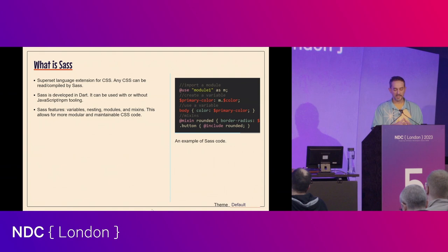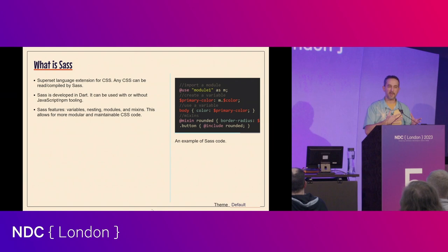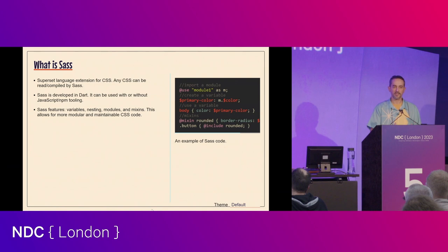Sass was originally written in Ruby, and over the years that has evolved. It is now written in Dart. One of the things people used to give Sass a hard time over was compilation speed, due to those other languages. Now that it's written in Dart, it is extremely fast at compiling your Sass code into CSS.